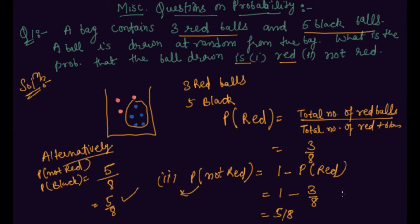So you are getting this from complementary events also, and this from direct formula means probability of getting black balls, total number of black balls in the bag upon total number of balls in the bag.